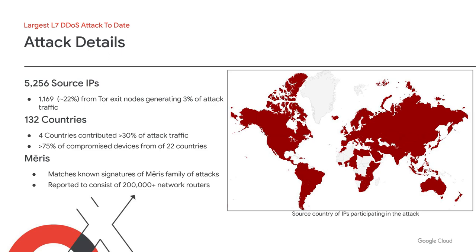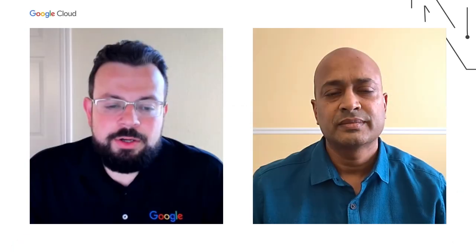Based on all the characteristics we were able to observe, we assessed that this attack came from the Mēris botnet, matching many elements that our industry partners have written about over the past year. The Mēris botnet has been reported to consist of at least 200,000 devices, in which case the 5,256 devices generating the 46 million RPS peak represents just 2.5% of the potential strength of this botnet. In addition to expecting attack sizes to continue their exponential growth, we think an even larger application level attack is possible today. Satya will tell you more about the details of how the attack was detected and mitigated, as well as provide mitigation guidance for your current or future web application deployments.